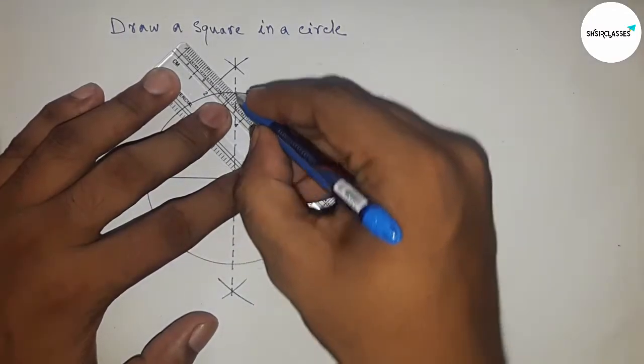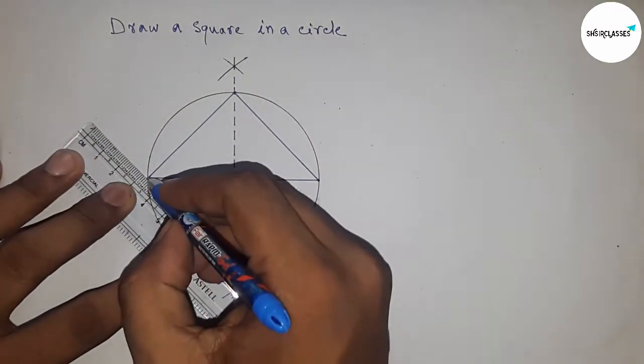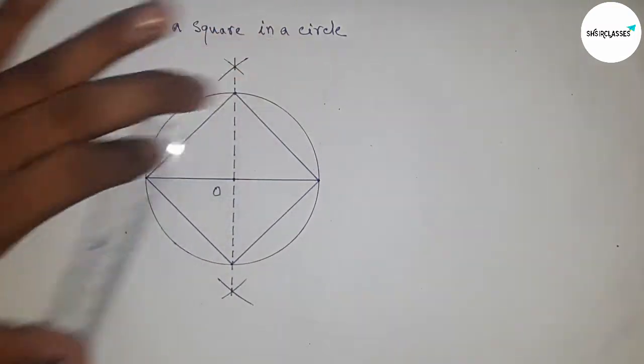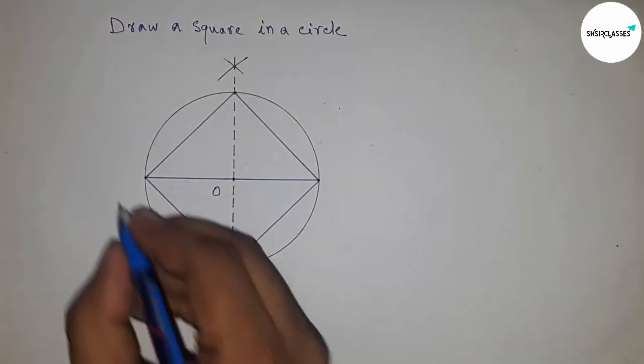Join this side, and this side, and this side, and this side. We got a square in the circle. This is ABCD.